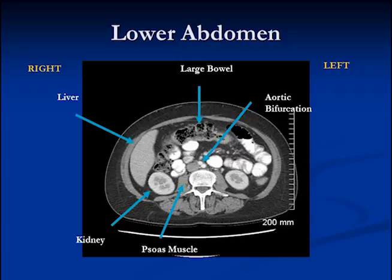Here we have the aortic bifurcation. The aorta has bifurcated into the common iliac arteries, and right next to it we have the inferior vena cava.